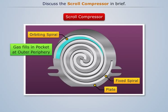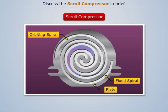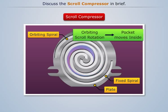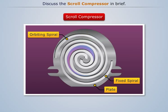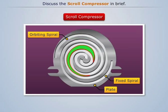The movement of the orbiting scroll causes gas to be filled in the gas pocket of a given volume at the outer periphery of the scrolls. Due to continuing movement, this gas pocket gets sealed and cut off from the atmosphere. Further rotation of the orbiting scroll causes the gas pocket to move inward from the outer periphery, resulting in a continuous reduction in size of the gas pocket.